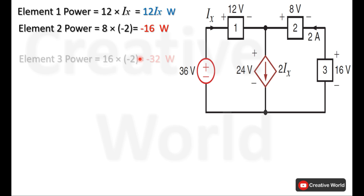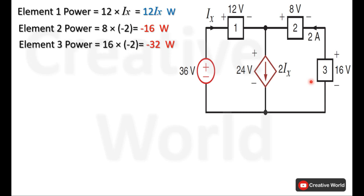Now calculate the power of element 3. The voltage across it is 16 volts and the current through it is 2 amperes. The current is entering from the negative terminal and leaving from the positive terminal, so this current is also taken with a negative sign. The power of element 3 is 16 × (−2) = −32 watts. This power is also being supplied through element 3 because of the negative sign.